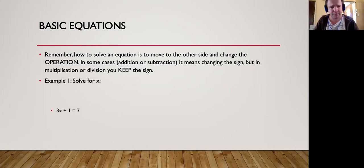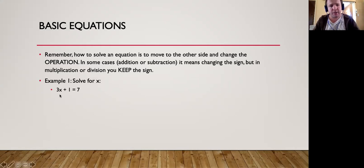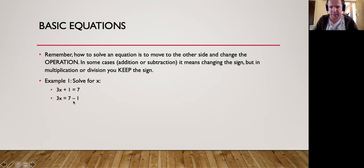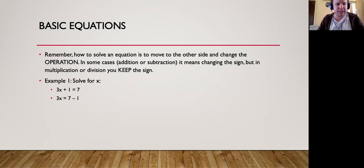For example, solve: 3x plus 1 is equal to 7. We first deal with the 1 — move it over to the other side and it becomes minus 1. So 3x is equal to 7 minus 1, which is 6.